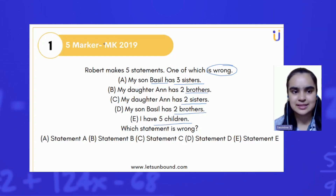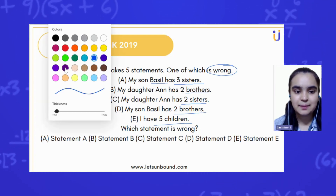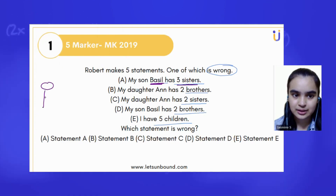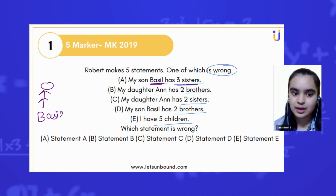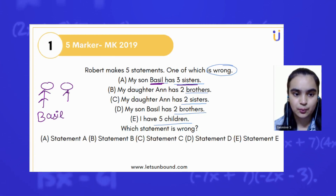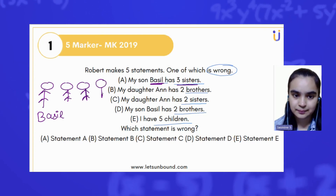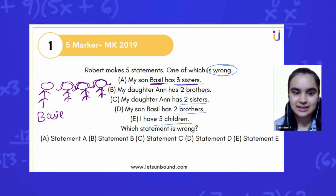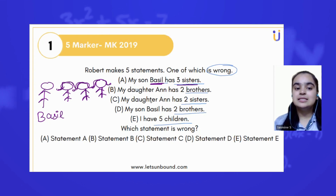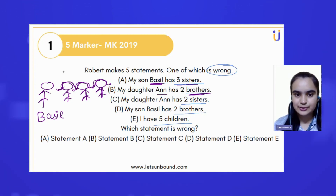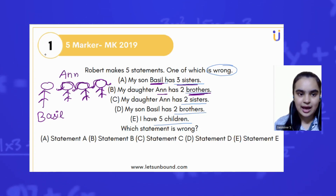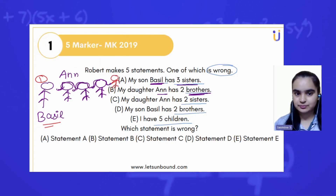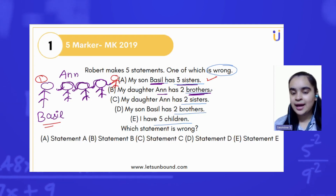Let's imagine and go step by step. In the very first statement, he mentioned that my son Basil has three sisters. So let's assume this person is Basil, and he is having three sisters. Statement number two is my daughter Anne has two brothers. Let's assume this is Anne, and Anne is having two brothers.